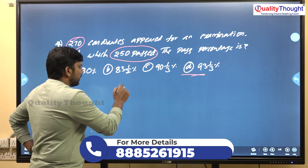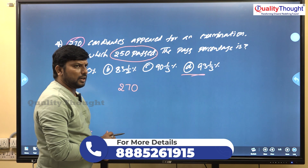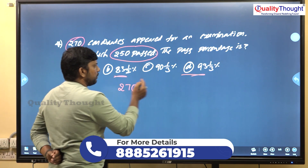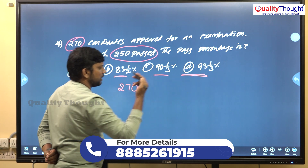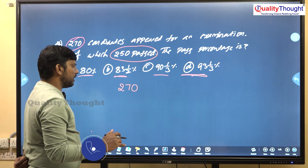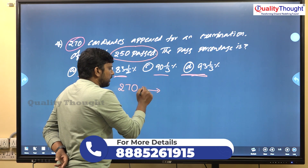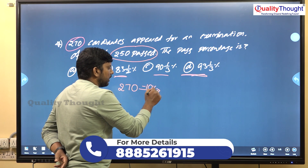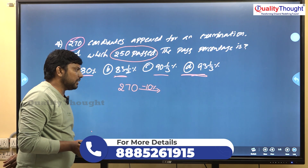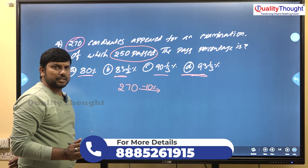Using 270 members with the options — 80%, 83%, 90%, and 93% — there is a 10 to 20 percent difference. So I am going to subtract the 10% value. 10% of 270 is 27.